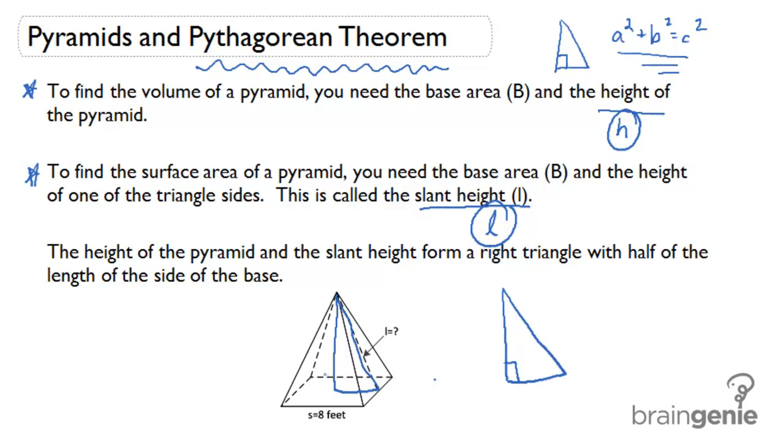This right triangle is going to be really helpful to us because it's going to give us a relationship between the height of the pyramid and the slant height of the pyramid. Height is this perpendicular height to the bottom of the pyramid and the slant height is the height of one of the triangles on the side or the slanted height.